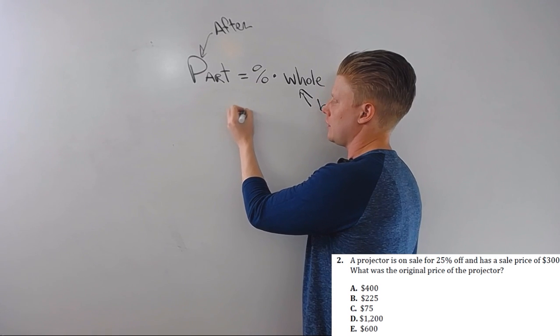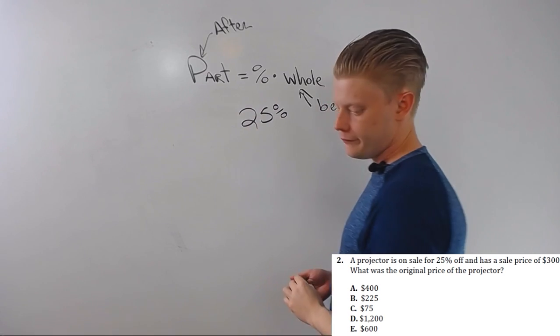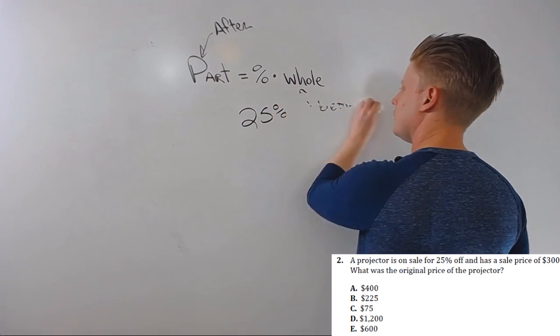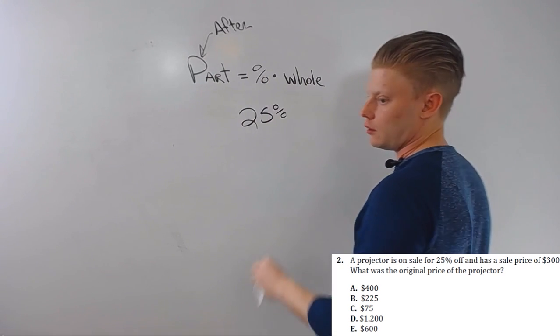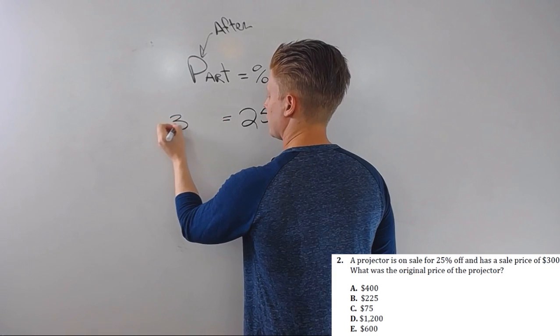Okay, so we can plug in 25% here. Now, whole is before the percent is applied, and we have after, so part is $300.